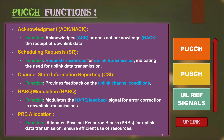CSI, or Channel State Information, provides information about the channel quality. This is important because it tells how the allocation of resources can be planned for all users. If the channel quality is good, the network needs fewer resources to transfer a given amount of data compared to transferring the same data in bad radio conditions.